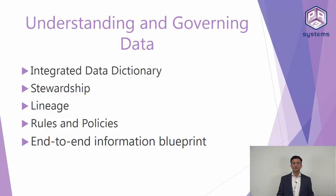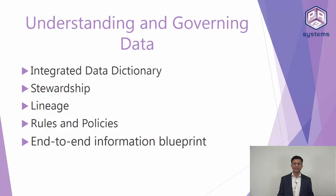Many times you also have to define rules and policies for different sets of data. For example, a social security number can have a specific number of characters — three characters, dash, two characters, and four characters at the end. You need to enforce these rules. If there is a social security number with just three digits, you know there is a problem with that data. Rules and policies allow you to check data as it is stored and during quality analysis to identify which data is valid and which is not.